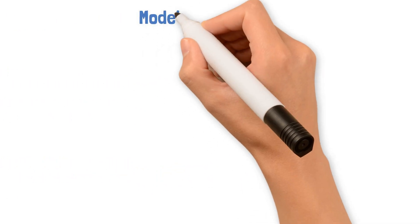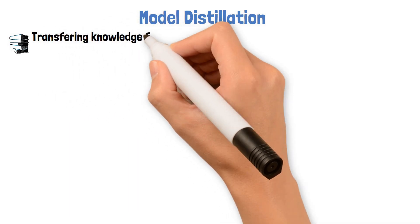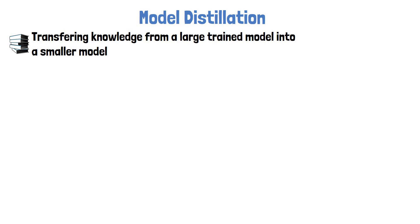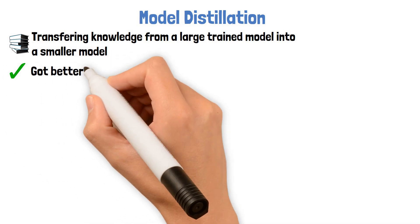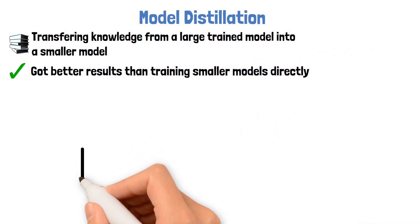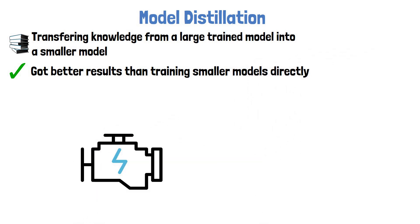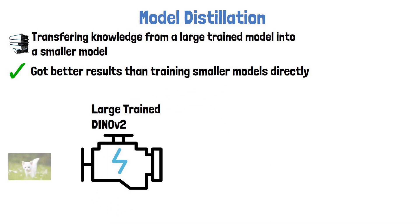This brings us to talk about how they generated the different model sizes, and the answer is distillation. Distillation means transferring knowledge from a large trained model into a new smaller model. An interesting note is that while doing so, they got better results than trying to learn smaller models directly. The way it is done is by taking the large pre-trained DynoV2 model and using it to teach new smaller models.